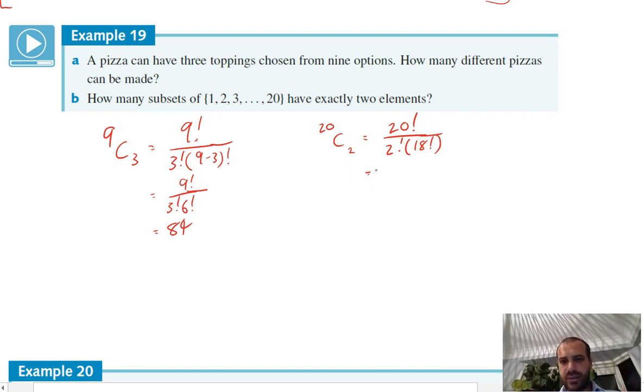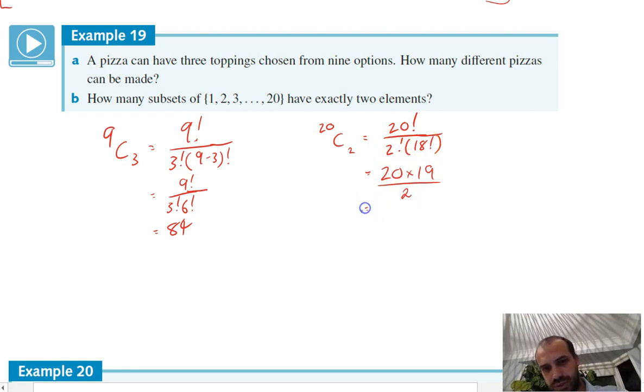That'll cancel out our 18 factorial there. And then we're left with two factorial, which is just two. That's 10 times 19. 190 is my answer there.